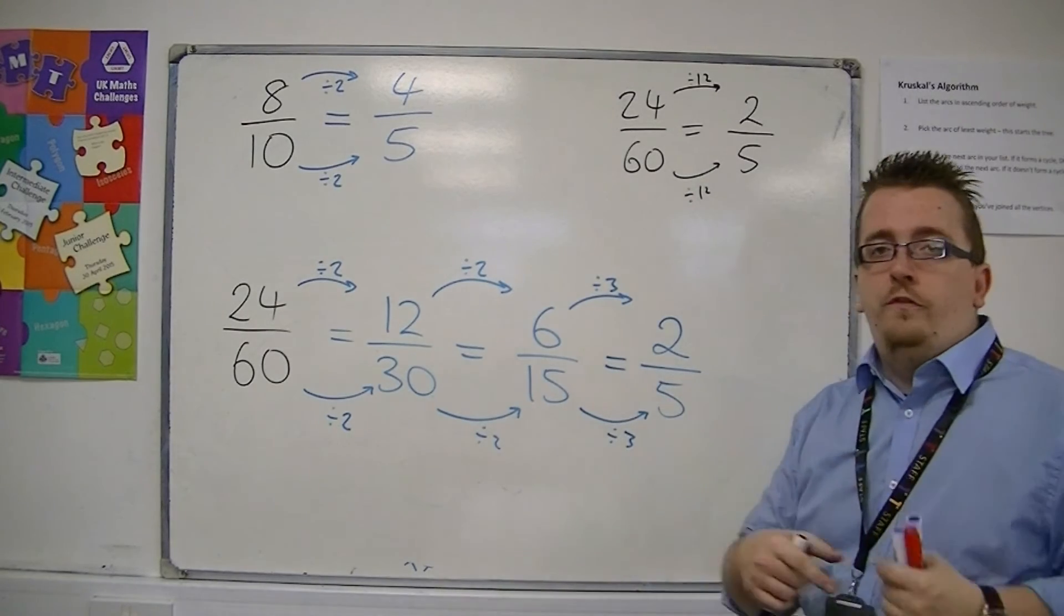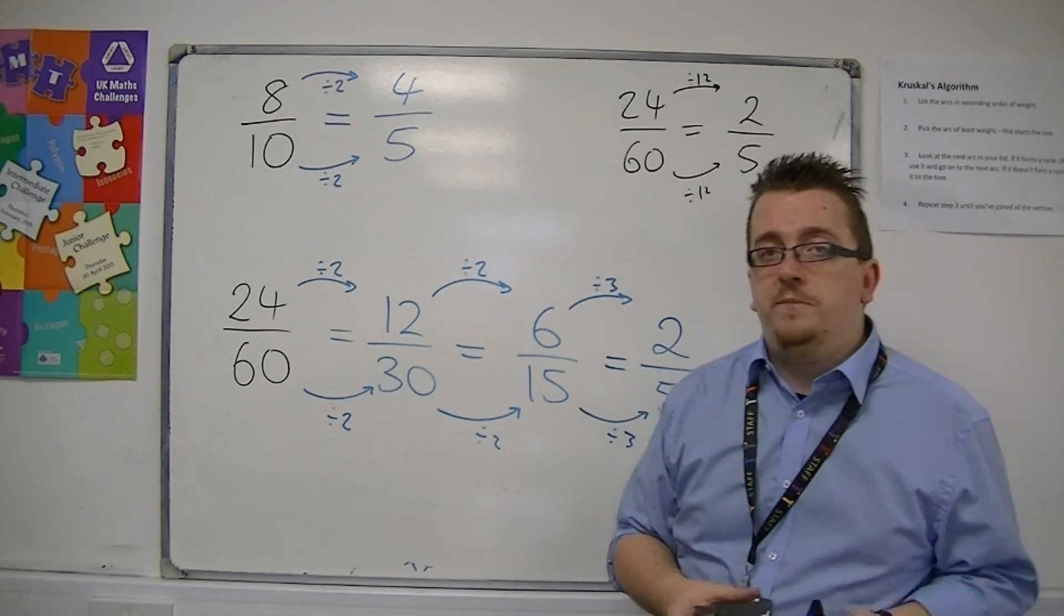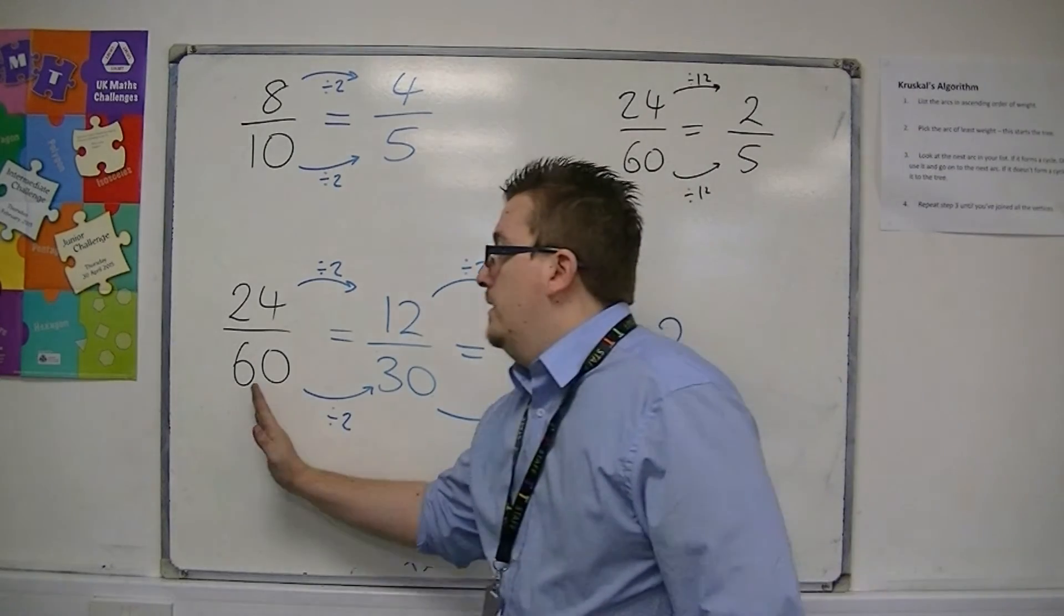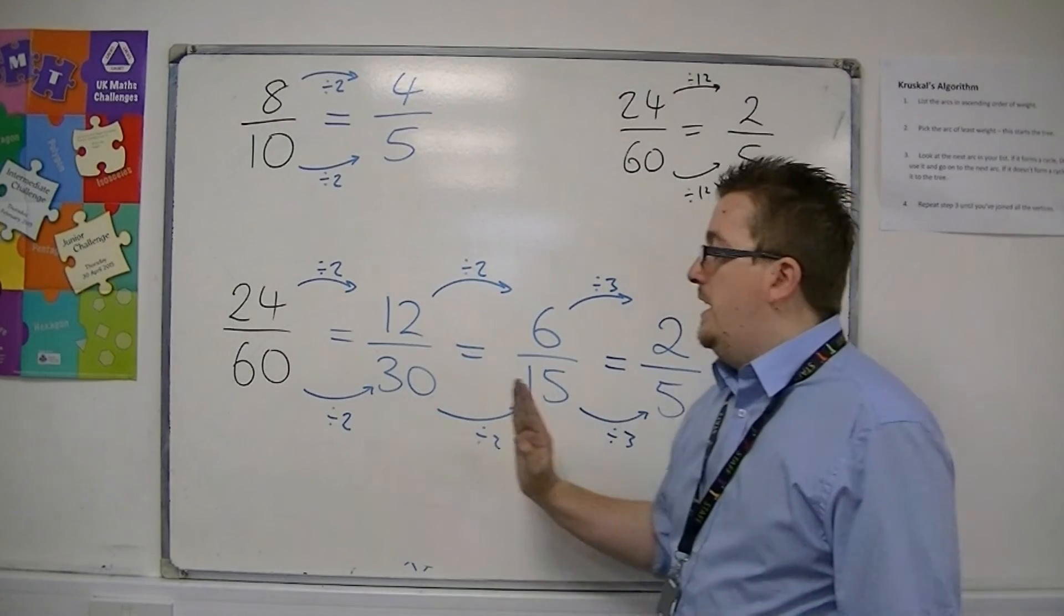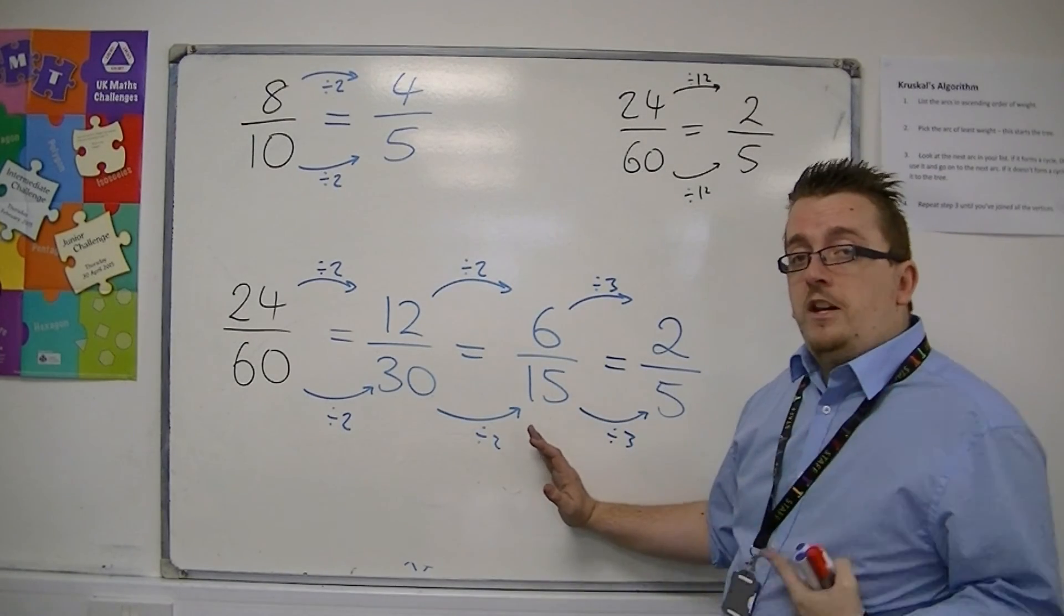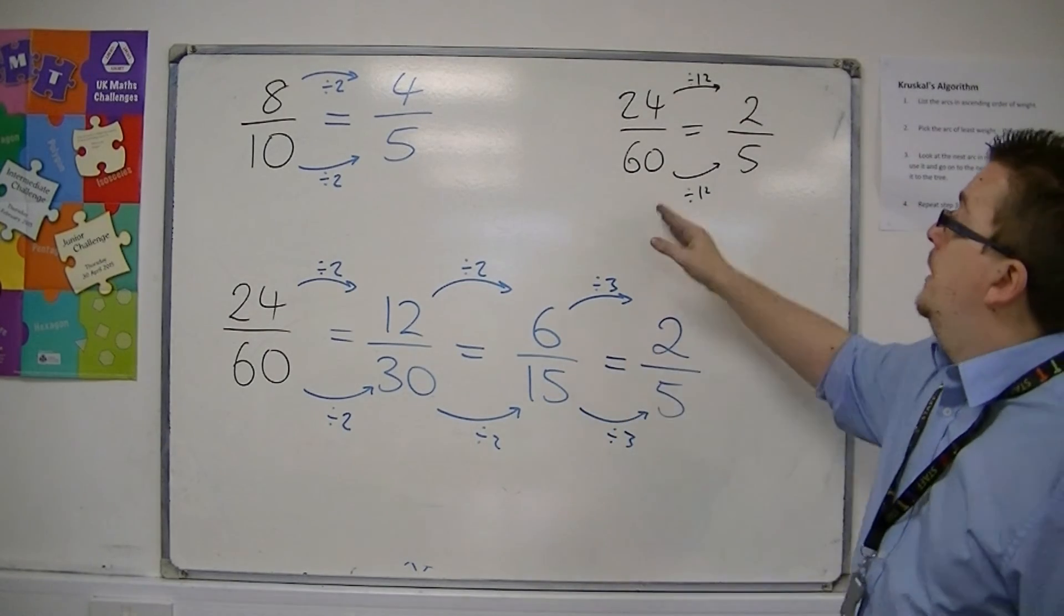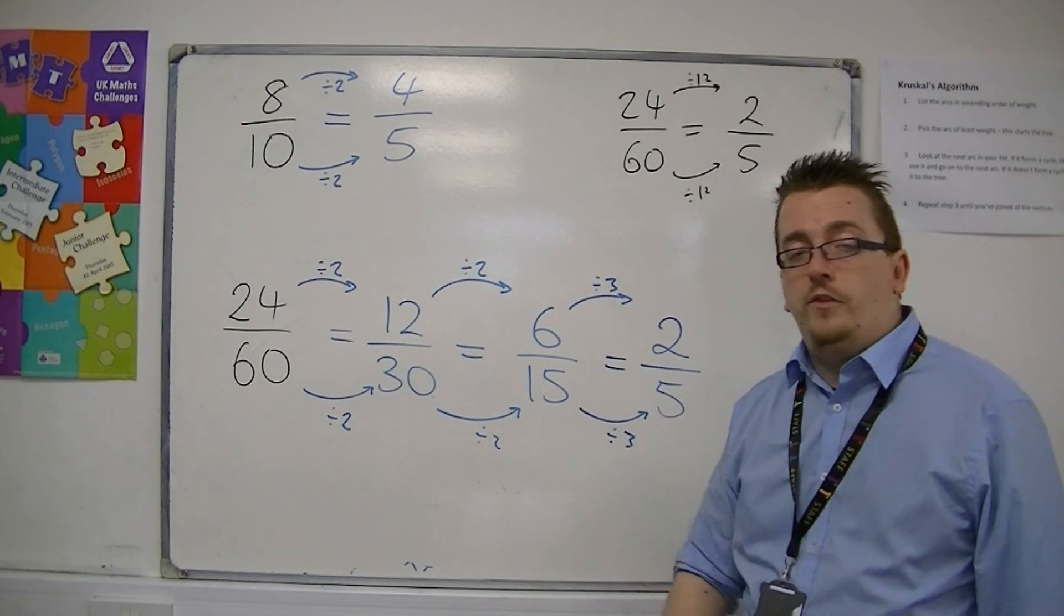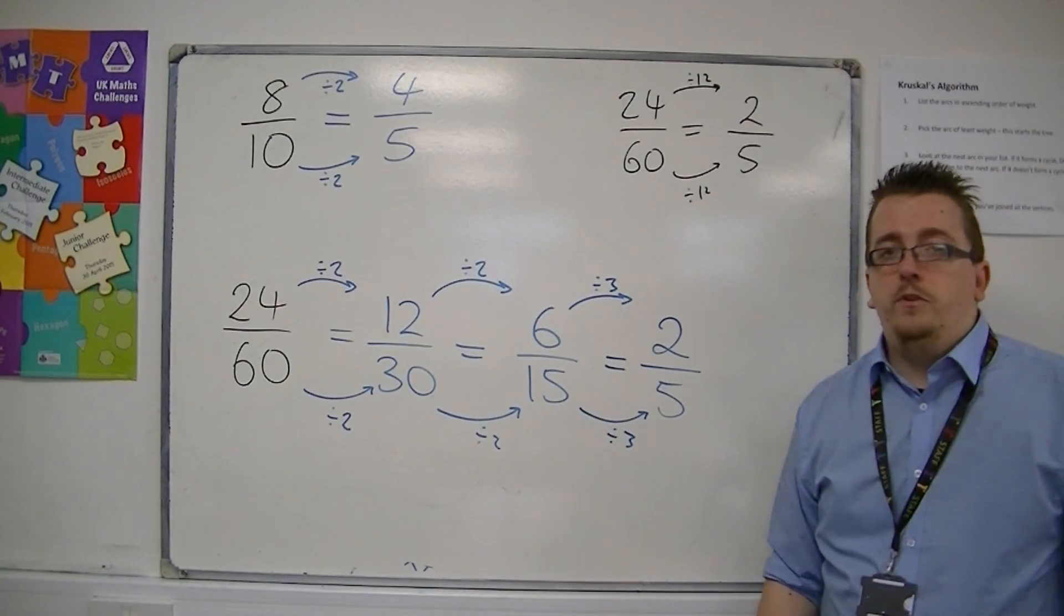It really depends on how strong your times tables are and how confident you are using them. If you're not particularly happy with your times tables, but you're happy with dividing by 2, then this method is particularly good. Because you just break the fraction down each time. It takes longer, but it will make sure that you're more likely to get it right than if you start looking for a number to divide by that's larger than 10. So slow and steady if you're not so confident.